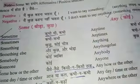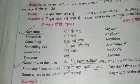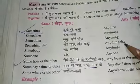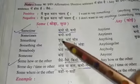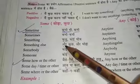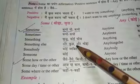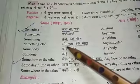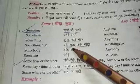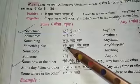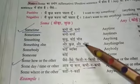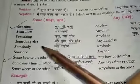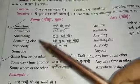Something else — hame kuchh aur. We just need to add something else. Is tarah se something else ka sentence ban sakta hai.